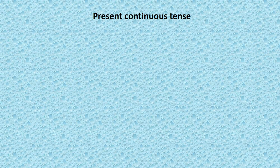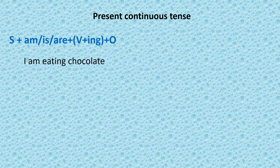Present continuous tense. Subject + am/is/are + verb with -ing + object. I — subject — takes 'am'. Eat with -ing: eating chocolate. I am eating chocolate. She — singular — so 'is'. Sing with -ing: singing song. She is singing song.